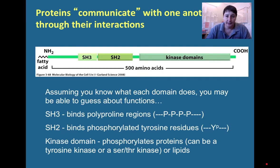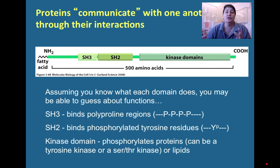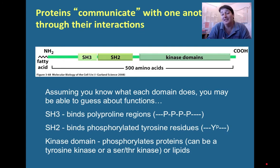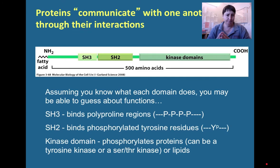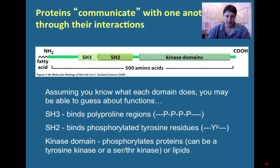In this schematic diagram—a rectangular box with some boxed domains within it—you see an amino terminus that has a fatty acid chain linked to it, leading to an SH3 domain, an SH2 domain, and a kinase domain followed by the C-terminus. I'm going to show you how this type of protein could fold and be regulated based on the different domains it possesses. An SH3 domain binds to polyproline regions in another protein or within itself.